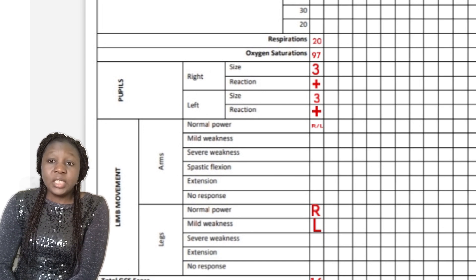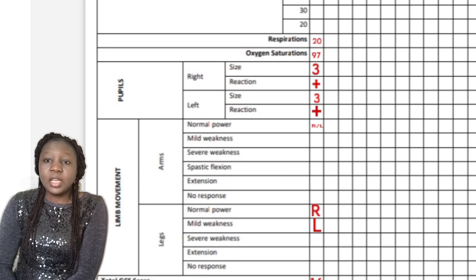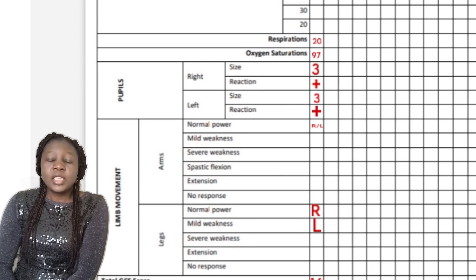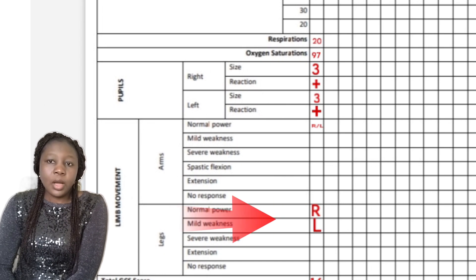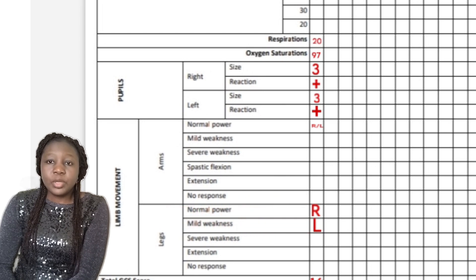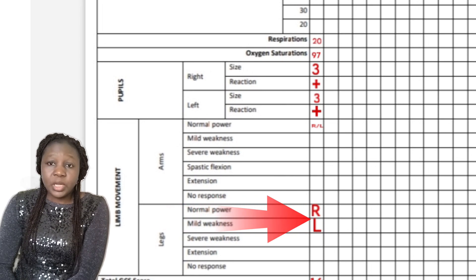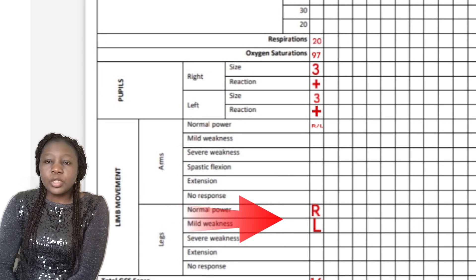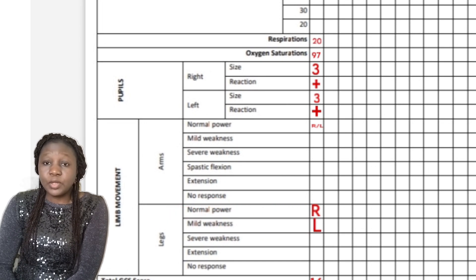Do the same for the legs — place your hands over the patient's legs and tell them to resist. If the patient is able to resist with enough strength for both the right leg and the left leg, that means they have normal power, so put capital letter R slash L in the box in front of normal power. However, if the patient has normal power for the right leg but mild weakness for the left leg, put R in the box in front of normal power and L in the box in front of mild weakness.